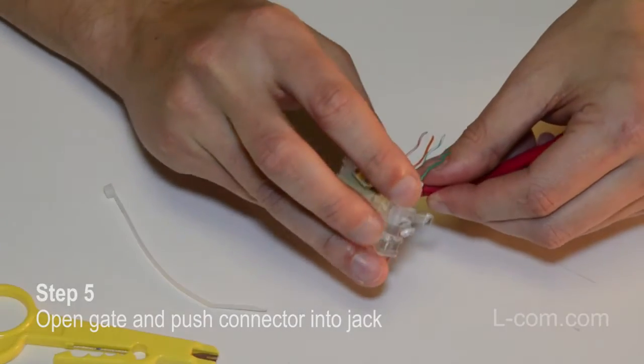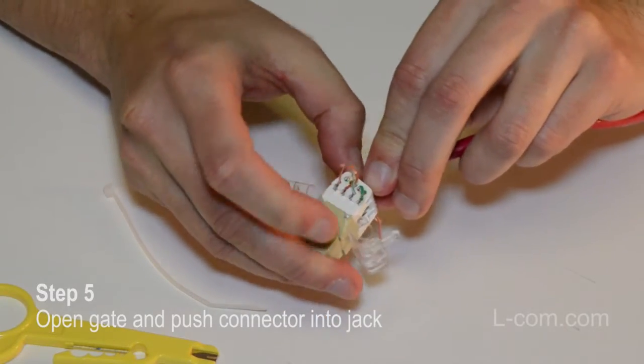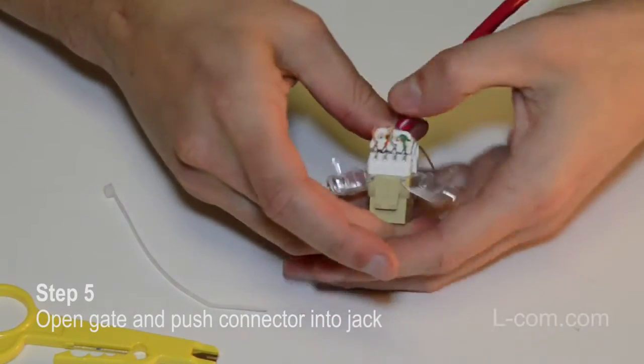Open the gate on the back of the jack. Place the wire guide onto the jack, matching up the guide by number and color, and press firmly. Press until you feel the connector catch.